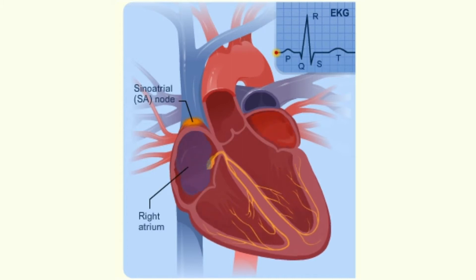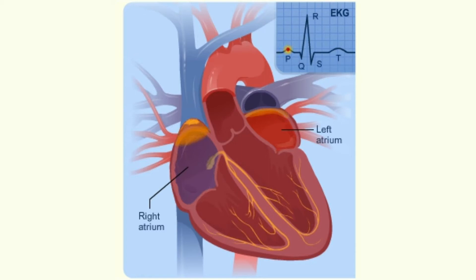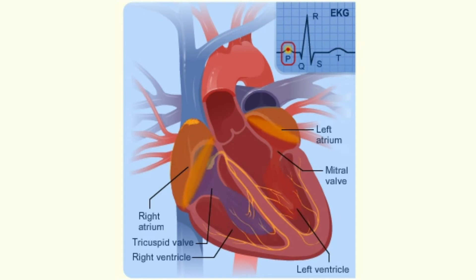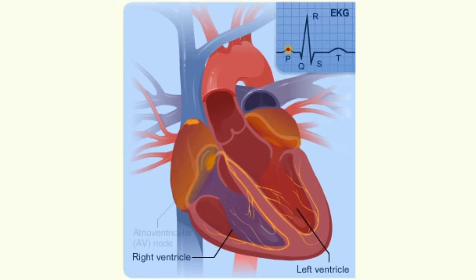When your heart's right atrium is full with blood, the electrical signal spreads across the cells of your heart's right and left atria. This signal causes the atria to contract, or squeeze. This pumps blood through the open valves from the atria into both ventricles. The P wave on the EKG marks the contraction of your heart's atria.